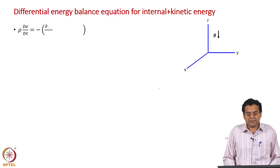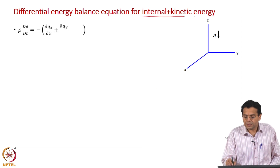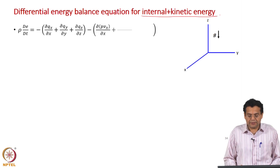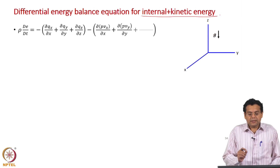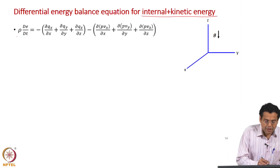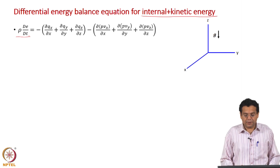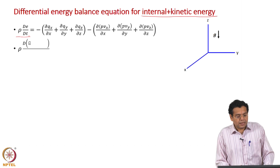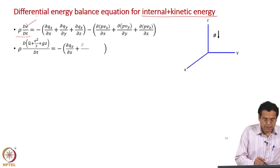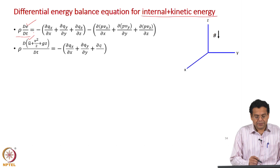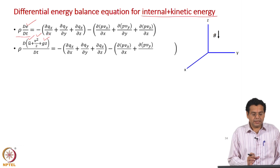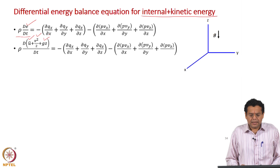The next step is to derive the differential energy balance equation in terms of internal and kinetic energy. The starting point is the equation expressing the differential energy balance in terms of total energy, written from a material particle viewpoint. We expand E: it is the total energy per unit mass, which is the sum of internal energy per unit mass, kinetic energy per unit mass, and potential energy per unit mass. We substitute for E in terms of these individual energy components in order to separate out the potential energy part.